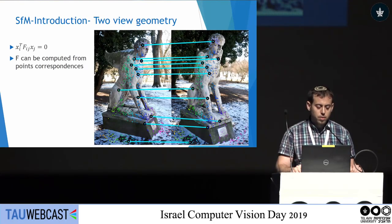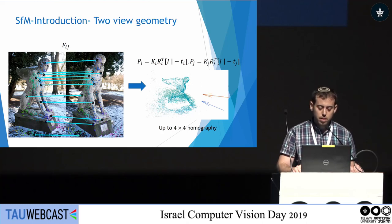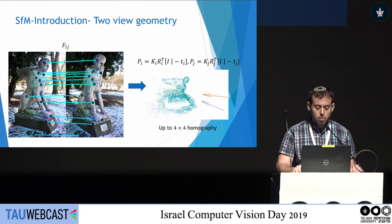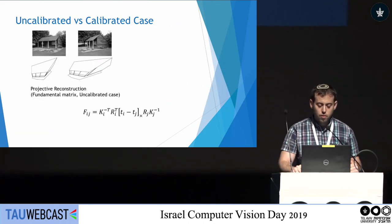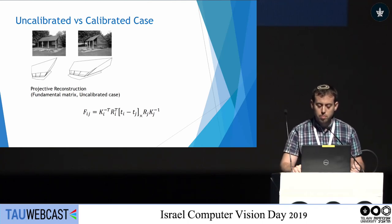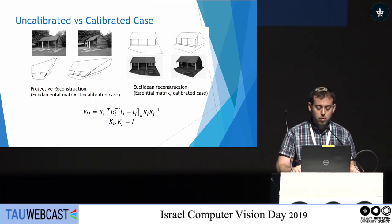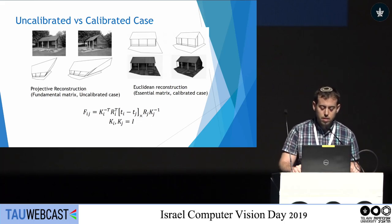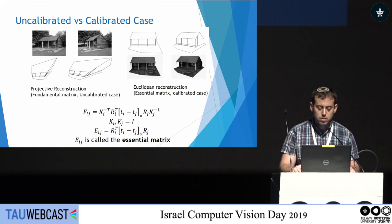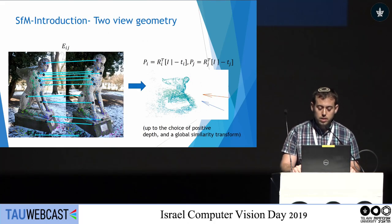Using this algebraic relation, F can be computed from point correspondences. Given the fundamental matrix, the camera matrices can be extracted and are defined up to a global 4x4 homography — the uncalibrated case, which introduces projective distortion that does not preserve angles. When we have calibration, we can build a Euclidean reconstruction defined up to a similarity transformation, normalize image coordinates so calibration matrices are identity matrices, yielding the essential matrix. Given the essential matrix, cameras can be extracted and are defined up to a global similarity transformation.